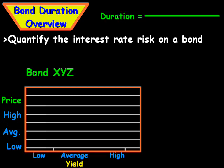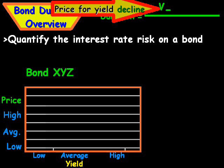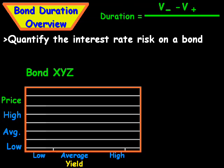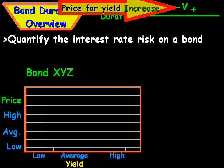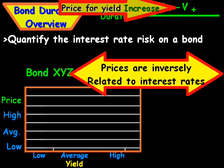Now, the formula for duration is simply you take V negative, which is the price for a yield decline. That means the price is rising, so that's a good thing. And then we subtract the price for the yield increase, which is known as V+. Now, remember that prices are obviously inversely related to interest rate changes.